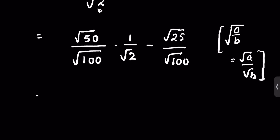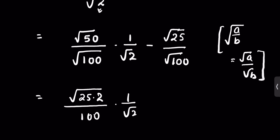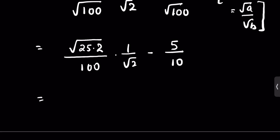Square root of 50 can be written as square root of 25 times 2. Square root of 100 is 10. Then times 1 upon square root of 2, minus square root of 25 which is 5, divided by square root of 100 which is 10.